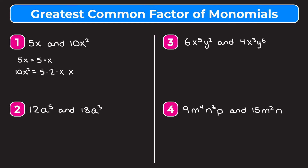To find the greatest common factor, we figure out which prime factors they have in common and multiply those together. They have a 5 in common and one x in common, so the greatest common factor is 5 times x, which gives us 5x. That means 5x is the greatest thing each monomial can be divided by evenly — you can divide both 5x and 10x squared by 5x and get a nice answer.